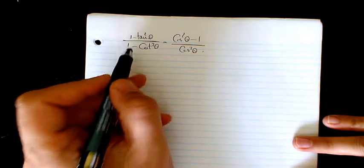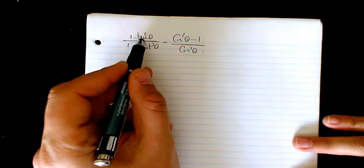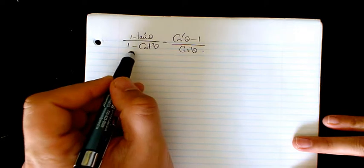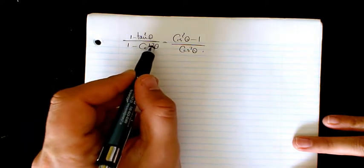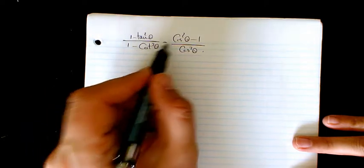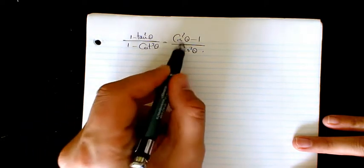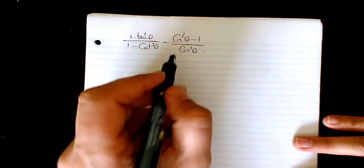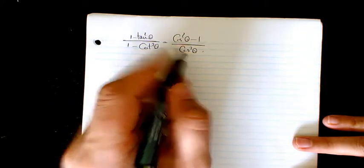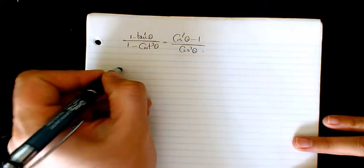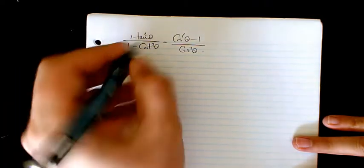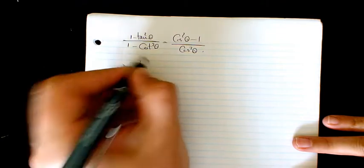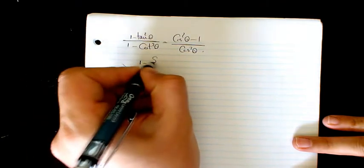In this video, we have (1 minus tan squared theta) divided by (1 plus cotangent squared theta) equals cosine squared theta minus 1, divided by cosine squared theta. What I can write is: I can have tangent as...